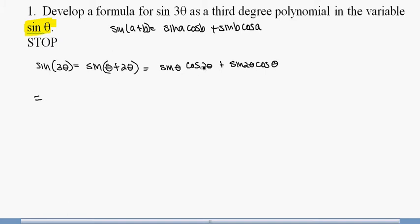So cosine of 2 theta, I have three different choices. I'll write them out on the side. Since I want my answer to be in terms of sine, the best one I'd want to use is 1 minus 2 sine squared theta.